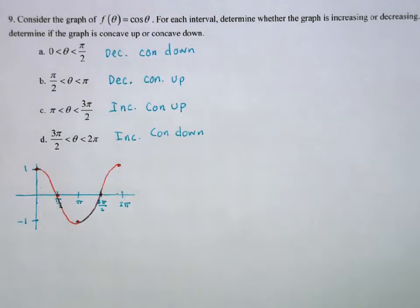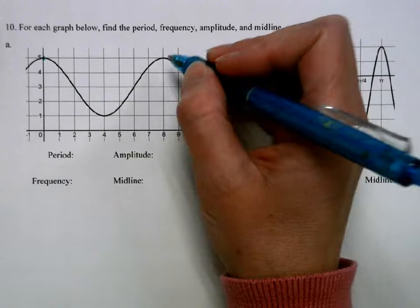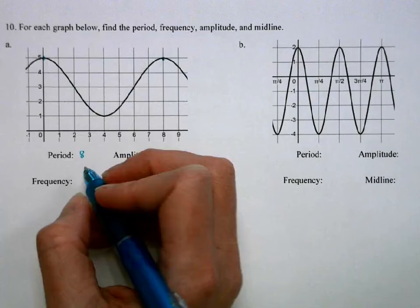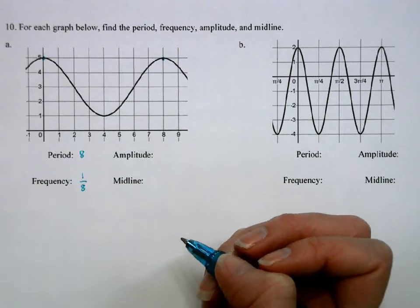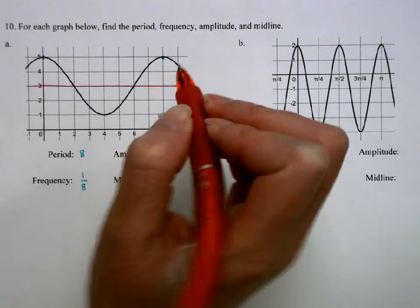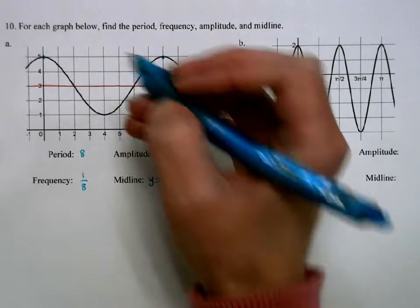Now we have graphs and we're going to identify four pieces of information: the period, amplitude, frequency, and midline. Period is how long it takes to complete one cycle — for the first graph, that's 8. Frequency is the reciprocal of period, so 1/8. The midline is at y = 3, and the amplitude — the distance from the midline to the max or min — is 2.